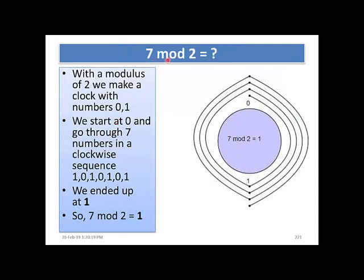Similarly, for 7 mod 2: if you want to find 7 in modulo 2, you repeat: 1, 2, 3, 4, 5, 6, 7. Then 7 mod 2 is equal to 1.